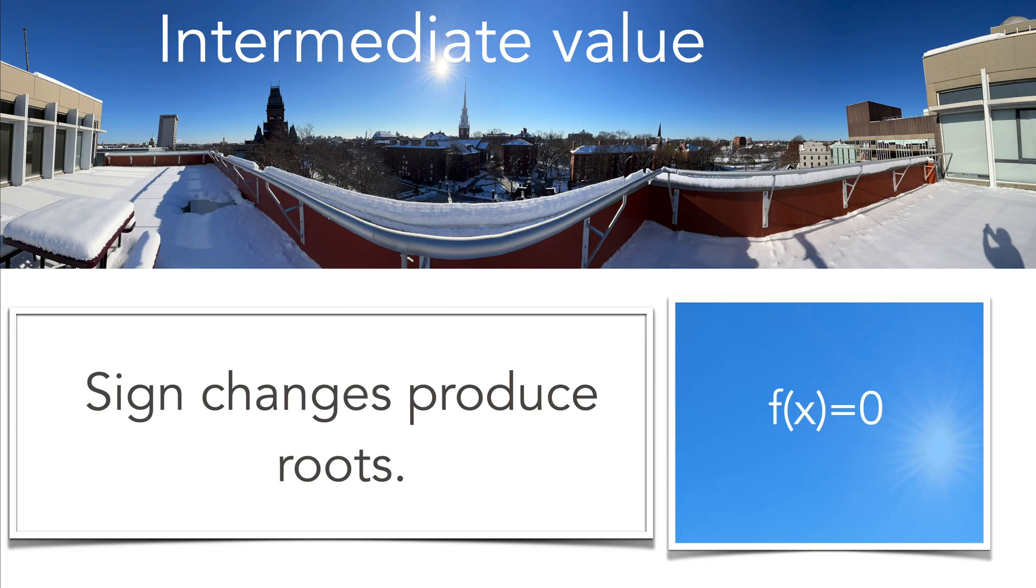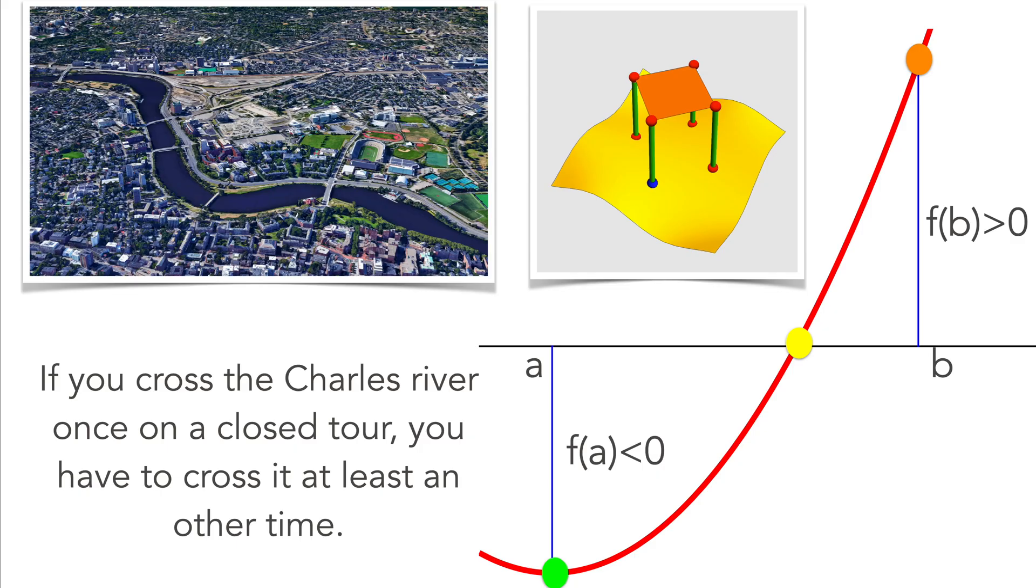Intermediate value theorem. Something simple but has amazing results like the wobbly table theorem, which tells if you have a square table on an arbitrary surface, there is always a position where all four legs are on the ground. A function which is positive somewhere, negative somewhere else, continuous, has a root.